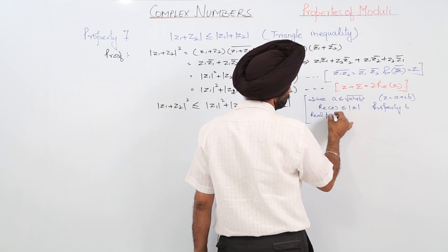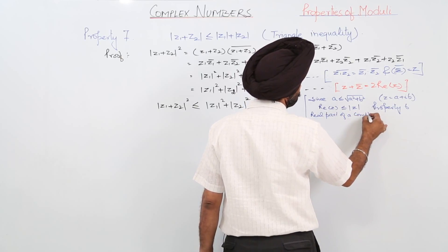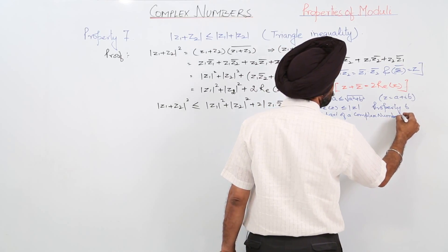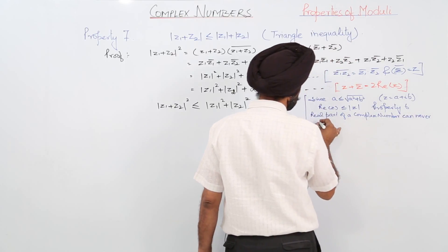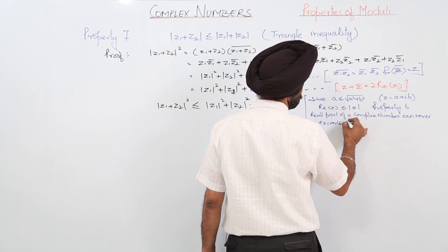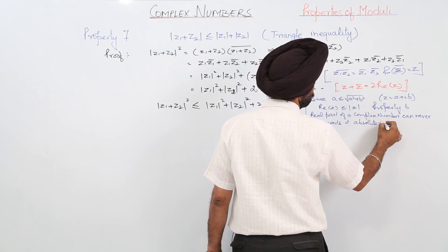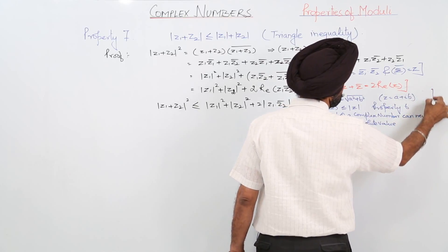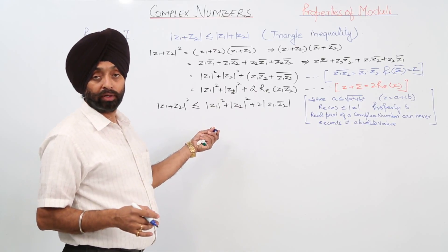The real part of a complex number can never exceed its absolute value. This is why we used the inequality when replacing the real part term.